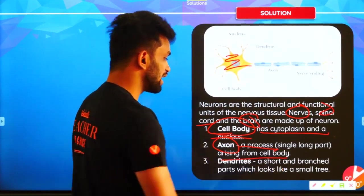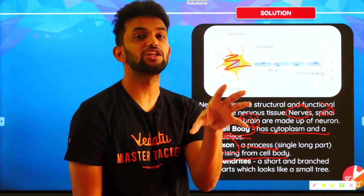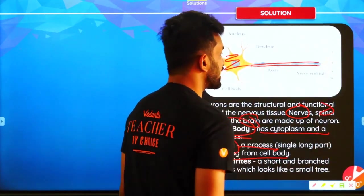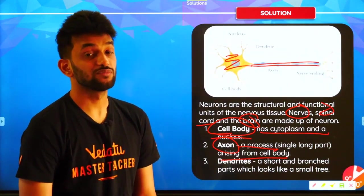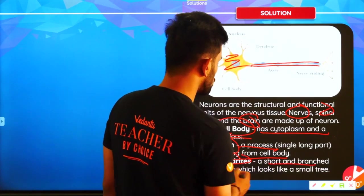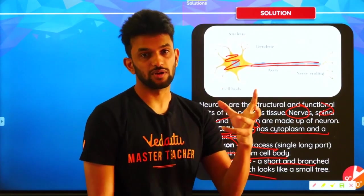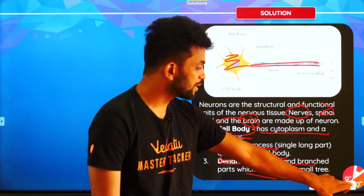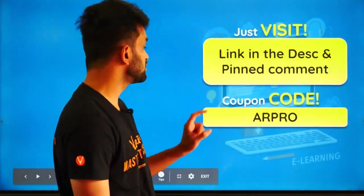The axon is a process arising from the cell body. In biology, process means continuation. You can write that the axon is a continuation of the cytoplasm which arises from the cyton. Then there are dendrites — these are short branched parts which enter into the cell body. This is an amazing question and will definitely come in the exam.